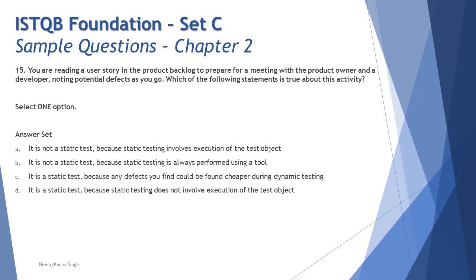Option A says it is not a static test because static testing involves execution of test objects. That's straightforward to rule out — this is clearly a static testing process. You can also rule out option B because it similarly says it is not a static test. There's no need to invest time reading the justification for options that contradict what the scenario clearly states.